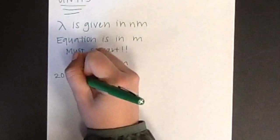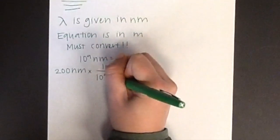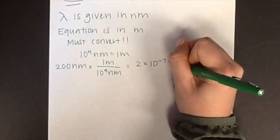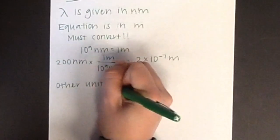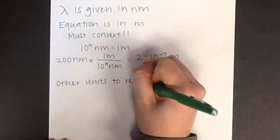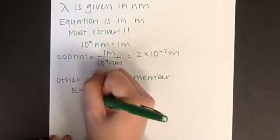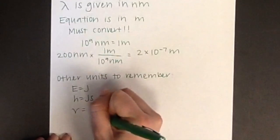For example, if your wavelength is 200 nanometers, divide by 10 to the ninth, which equals 2 times 10 to the negative 7 meters. Other units to remember include energy, which is in joules, Planck's constant, which is joules times seconds, and frequency, which is 1 over seconds or hertz. A practice problem will follow.